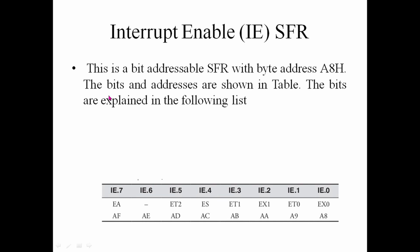In this example, not only must individual interrupts be enabled, we must also enable the global interrupt enable bit. If we need to enable specific interrupts, we set the corresponding bits. We also need to set EA to enable interrupts globally.